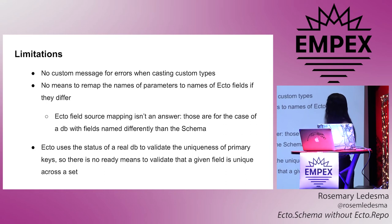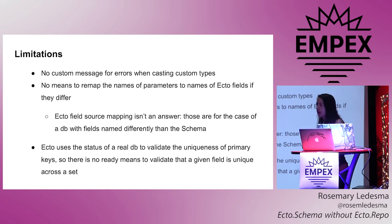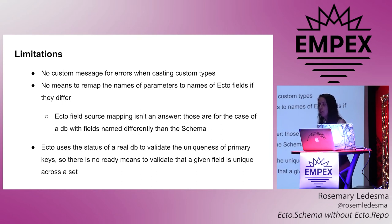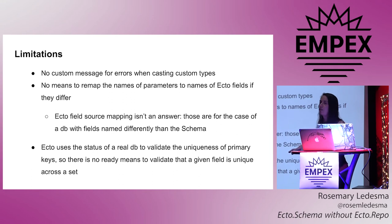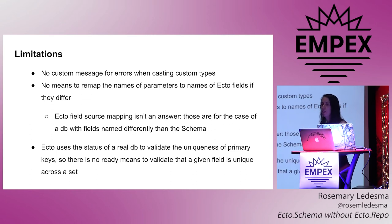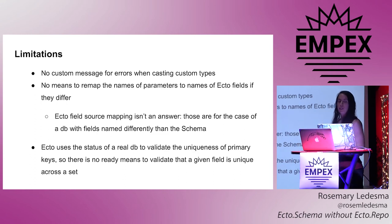Some limitations I encountered: while you can provide strings for messaging in most cases, one area where there's no provision to do it is when casting a custom type. There's a closed GitHub issue for this — they said you can go into the errors changeset afterwards and change the message, but it would be nice to provide it right when you're writing the custom type. Currently there's no way to do that.